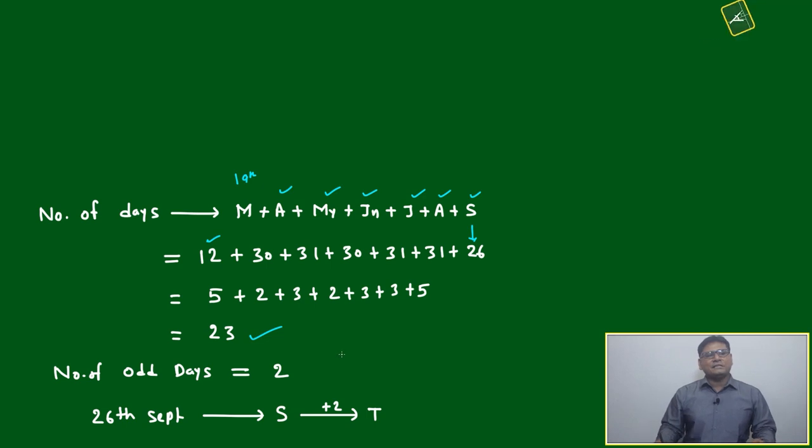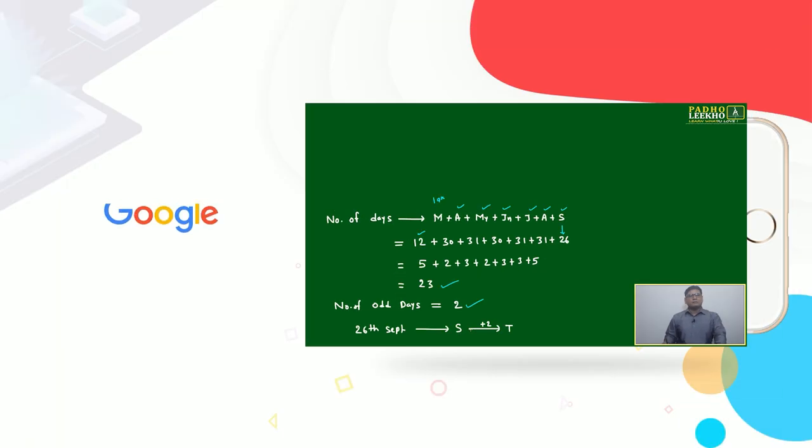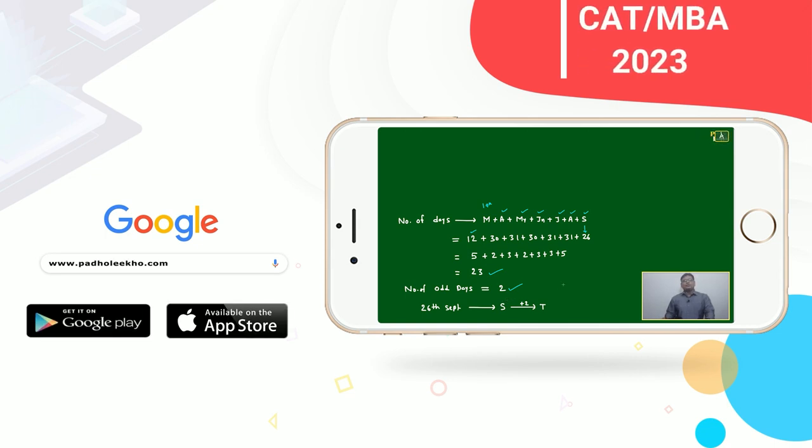Number of odd days: divide by 7, it will be 2. Means 26th September will be not Sunday, it will be Tuesday. 19th March was Sunday plus 2, so it will be Tuesday.